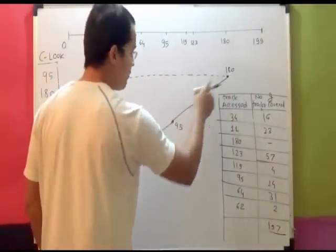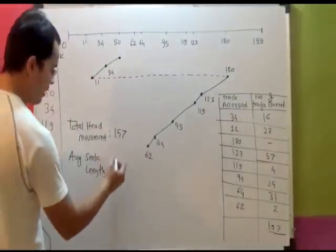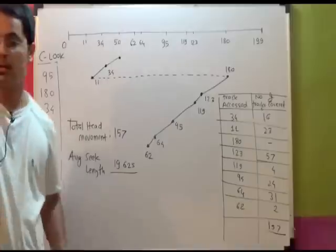So 1, 2, 3, 4, 5, 6, 7, 8. How much is it? So this is your average seek length and this is your total head movement.